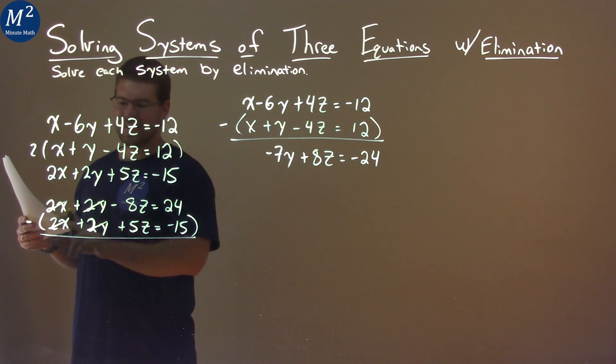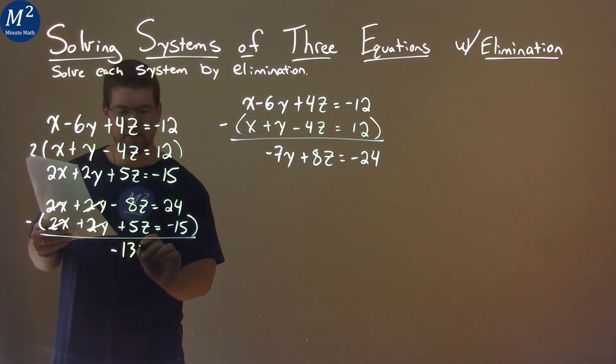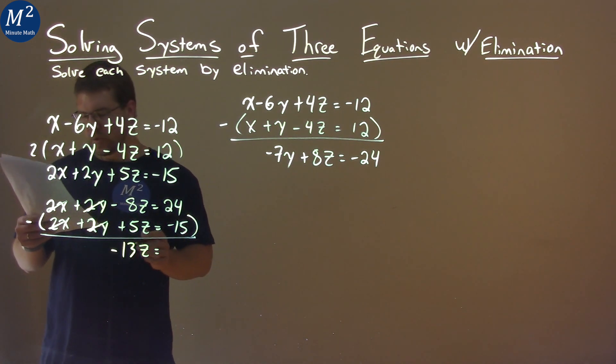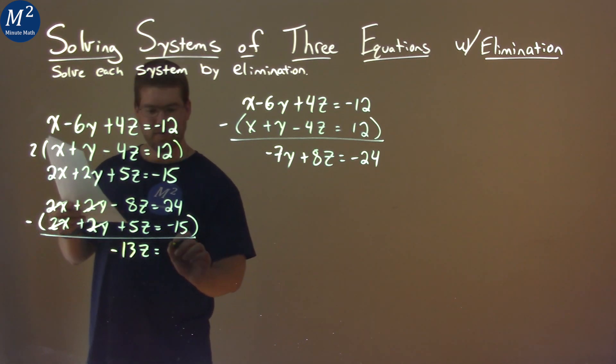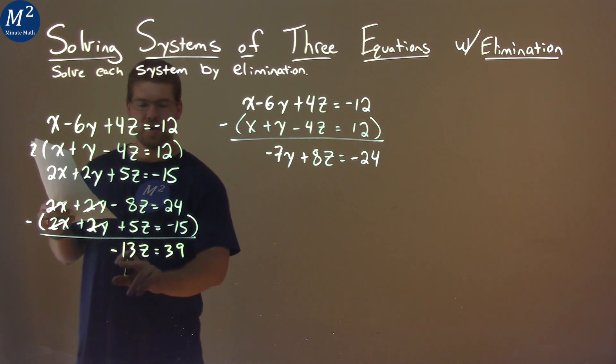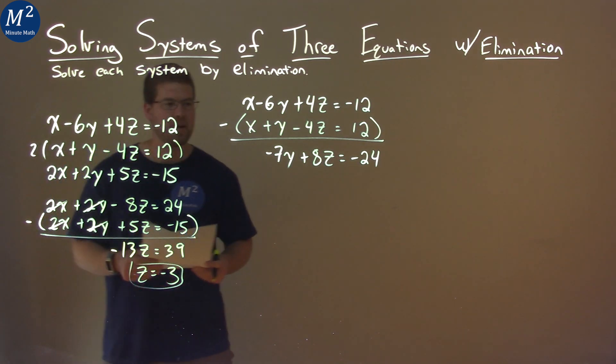Negative 8z minus 5z is negative 13z, and then 24 minus negative 15 is like adding 15, that's 39. Divide both sides by negative 13, and z equals negative 3. Great. We have one of our values.